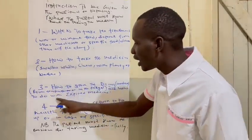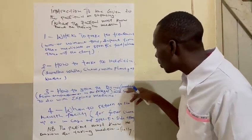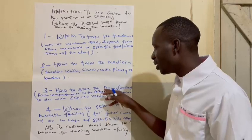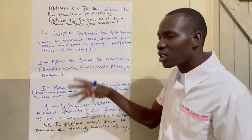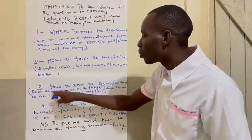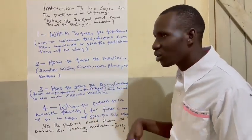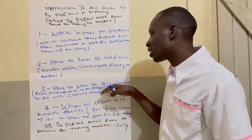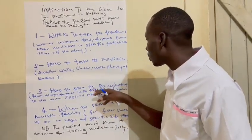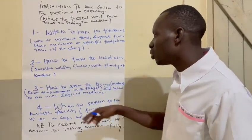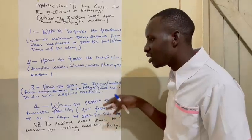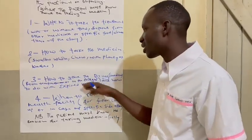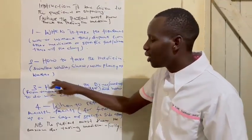Information number three: how to store the drug or medicine. How to store at room temperature or in the fridge. Drugs like tablets and capsules you can store at room temperature. Those who are receiving injections like insulin have to keep it at a certain temperature — in the fridge. And how to deal with expired medicine: if the medicine has expired, you have to come back to the health provider and say your drug is expired, so they can give you another one or decide what to do with the drug.